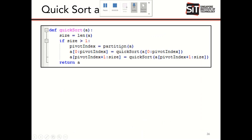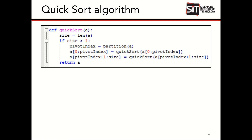Here is the quicksort algorithm in code. As long as the size of the array is greater than one, you execute a few lines. The first line calls partition, which chooses the pivot and splits the array into a left side and a right side. The pivot index returned tells you the index of the pivot, splitting the array into the left portion and the right portion.